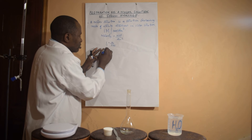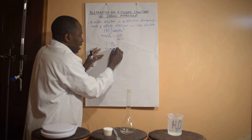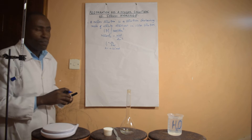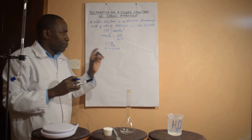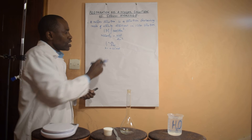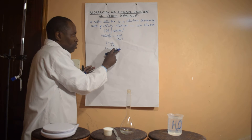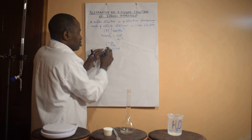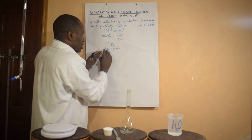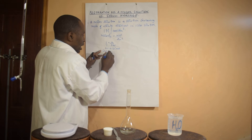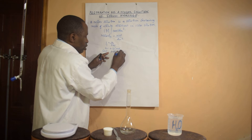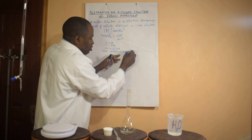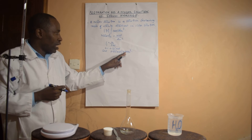Cross-multiplying, x is equal to 0.25 moles. Therefore, when you're preparing 250 mL of any one molar solution, you're going to have 0.25 moles dissolved in 250 cubic centimeters of solution. The concentration can be expressed as 0.25 moles per 250 mL.